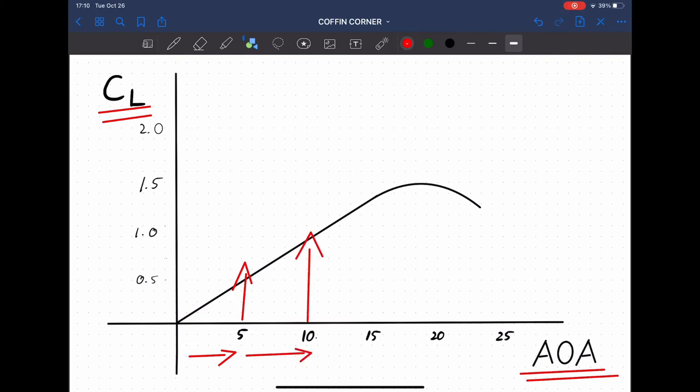Pull back again to 10 degrees, CL goes up. Pull back some more, CL goes up. I'm noticing a pattern here. You pull back to 20, CL should go up. Pull back to 25, it should go up, right?